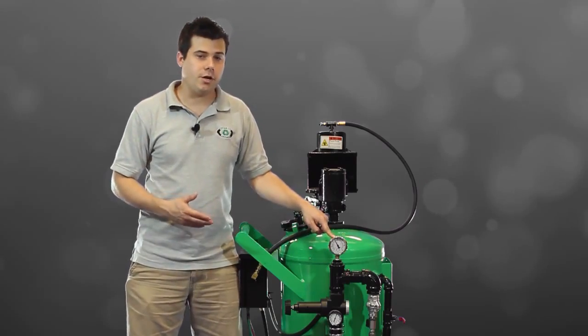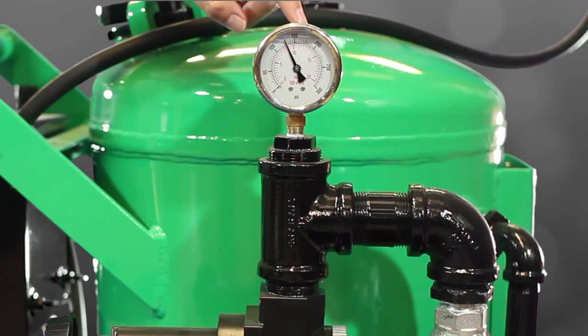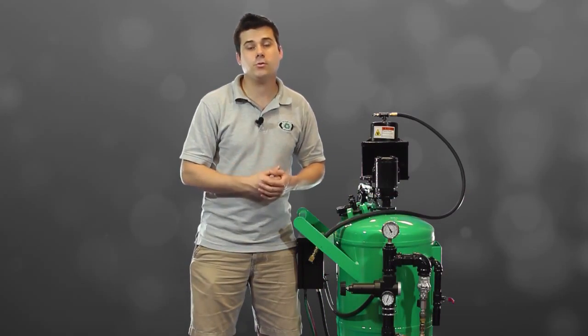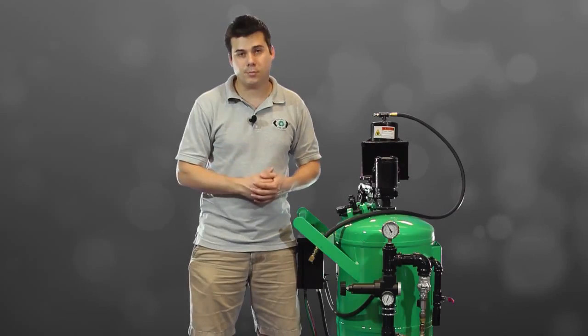This is the inlet pressure gauge, and it measures the air pressure coming from the compressor. Whatever this reads will be the maximum amount of blast pressure that you can blast with, because that's all that the compressor is putting out.